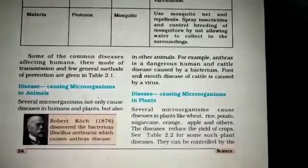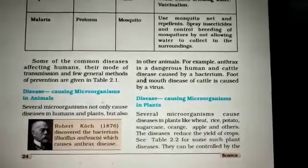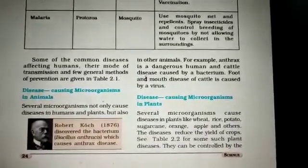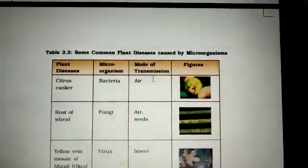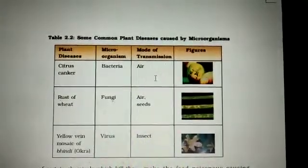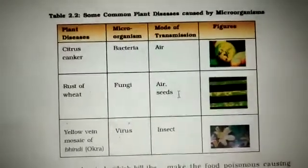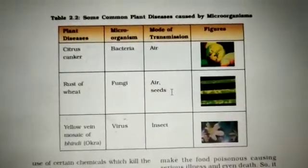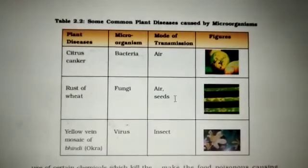Similarly, there are disease-causing microorganisms in animals and plants. Several microorganisms cause diseases not only in humans but also in animals. One example is Bacillus anthracis, discovered by Robert Koch in 1876, which causes anthrax disease — a very dangerous disease affecting humans and cattle. Foot-and-mouth disease of cattle is caused by a virus. Several microorganisms also cause diseases in plants like wheat, rice, potato, sugarcane, orange, apple, and others, reducing the yield of crops.